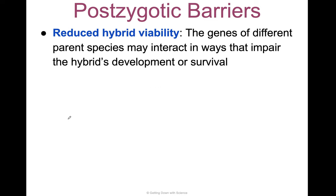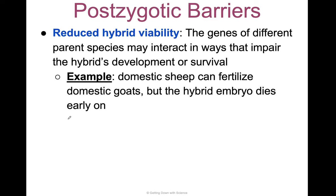Reduced hybrid viability is when the genes of different parent species interact in ways that impair the hybrid's development or survival. For example, domestic sheep can fertilize domestic goats, but the embryo dies very early on — it goes through a few stages of mitosis and then dies. It's never going to become a viable embryo.